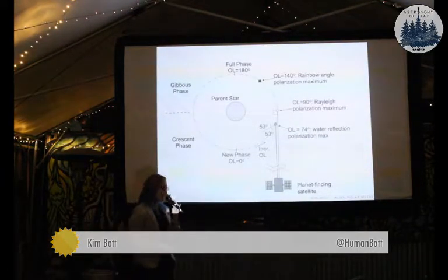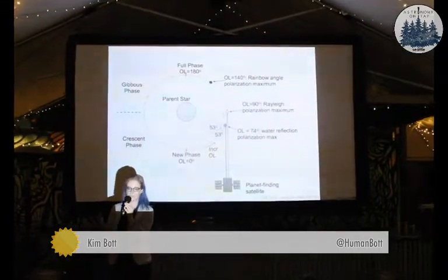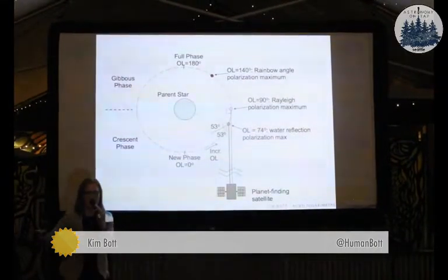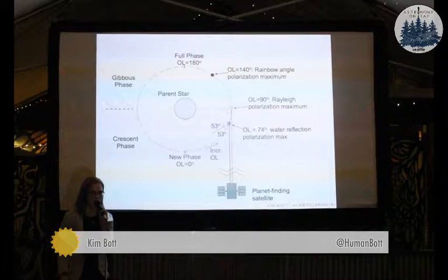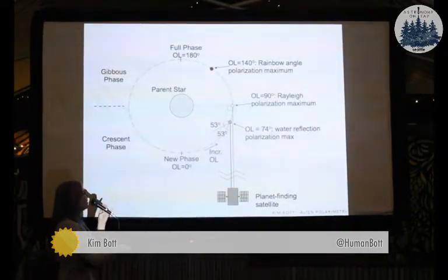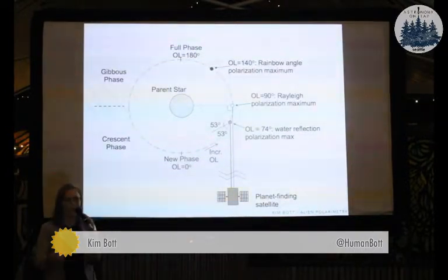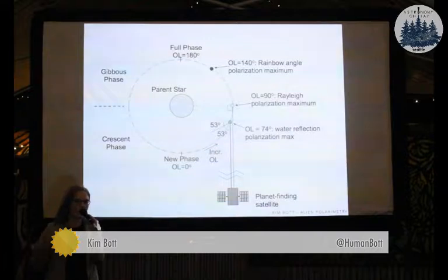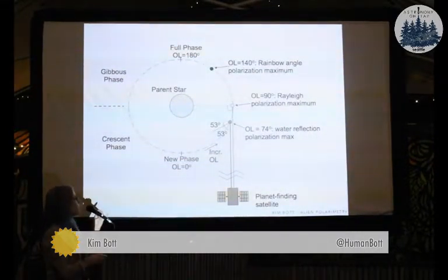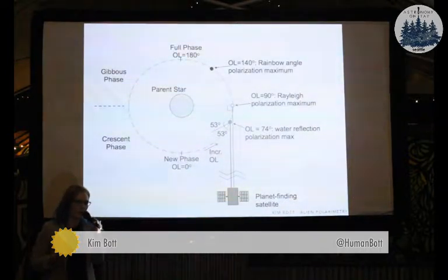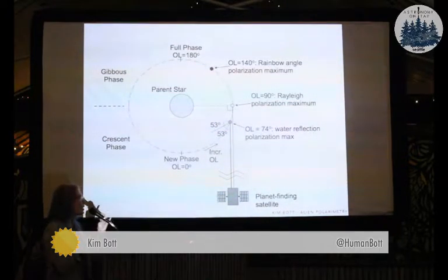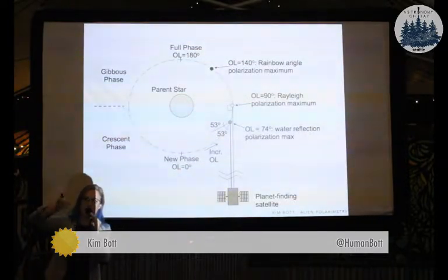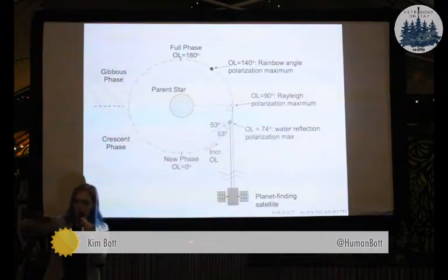Another reason this is a super useful technique for studying planets is — this schematic looks complex, but it's quite simple. OL just refers to orbital longitude, telling you how far along the orbit the planet has gone. The phases are just like the moon's phases. The key point is that polarimetry is dependent on the angle of the planet, so we're getting directional information as well as intensity — we can look at how light is reflecting off or interacting with particles in the atmosphere.